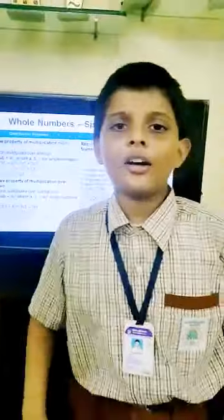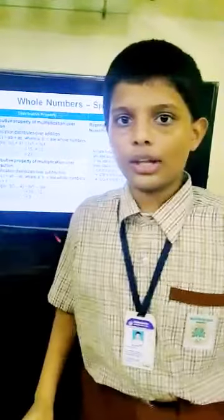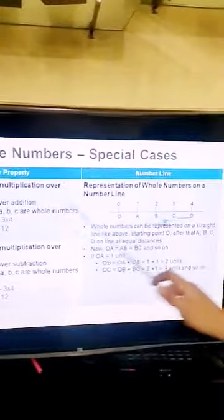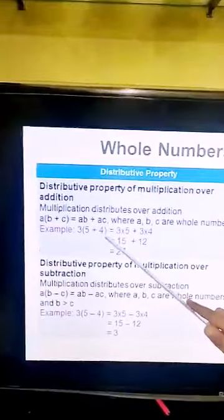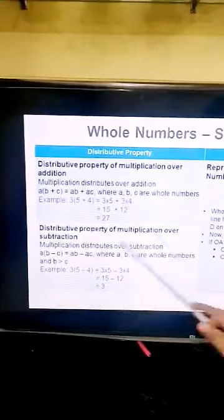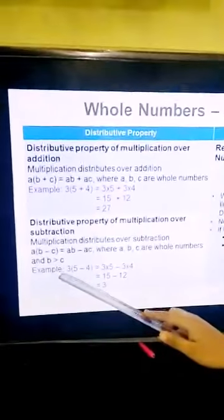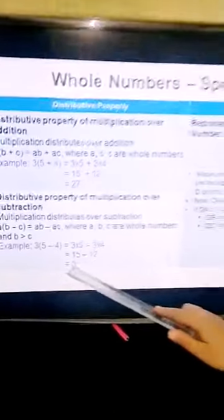Finally, we will see the special cases. We can explore some special cases about natural numbers and whole numbers. There are two types: distributive property and the number line. Distributive property of multiplication over addition: multiplication distributes over addition. For example, 3×(5+4) = (3×5)+(3×4) = 27. Distributive property of multiplication over subtraction: 3×(5−4) = (3×5)−(3×4) = 3.